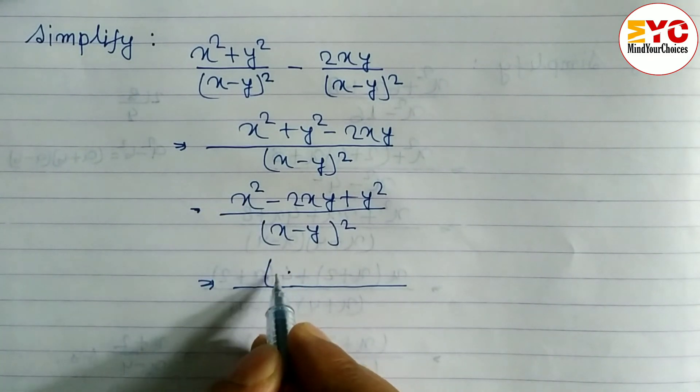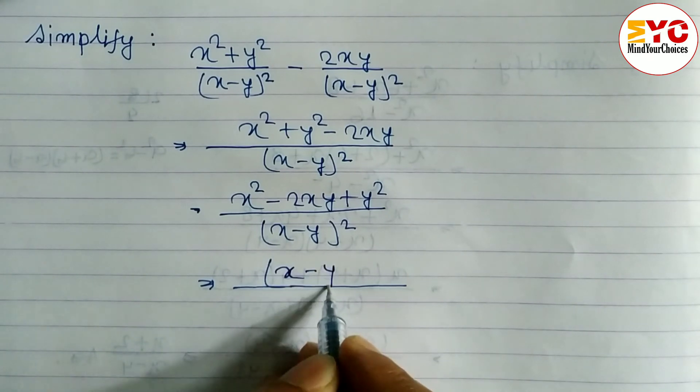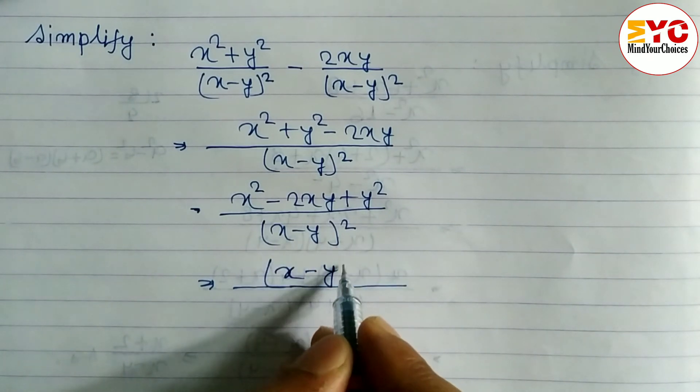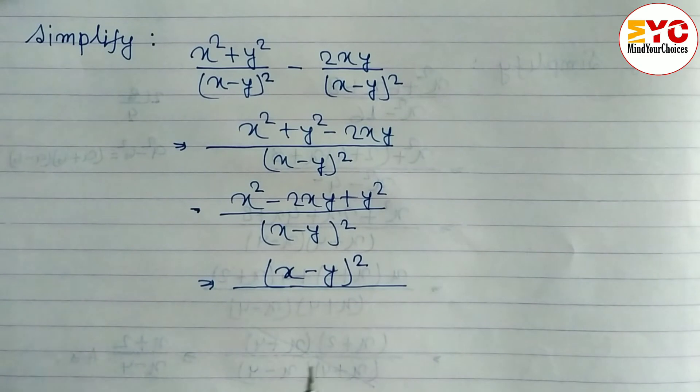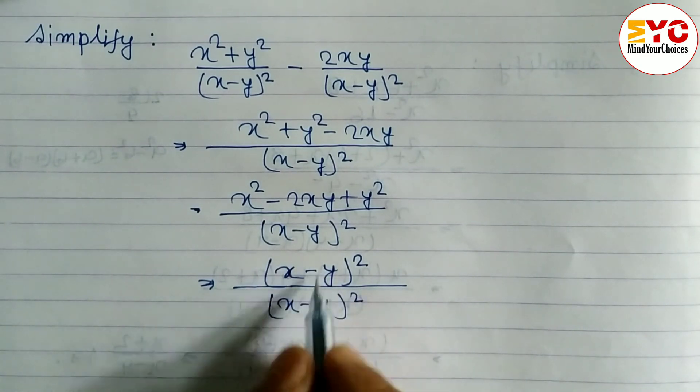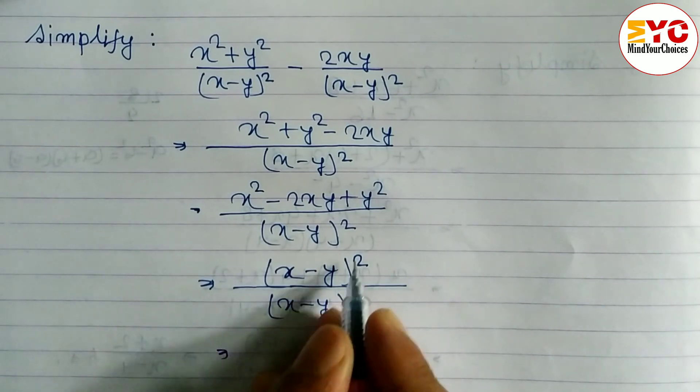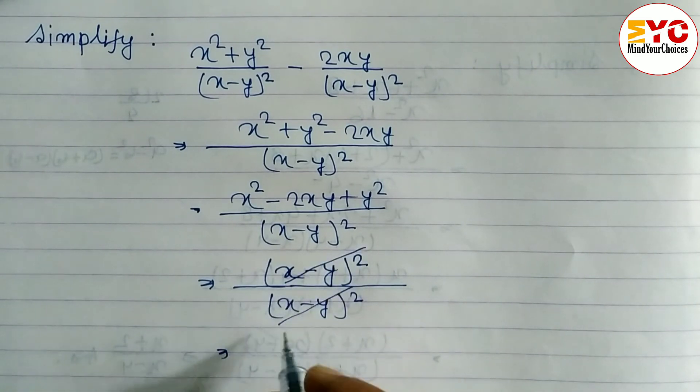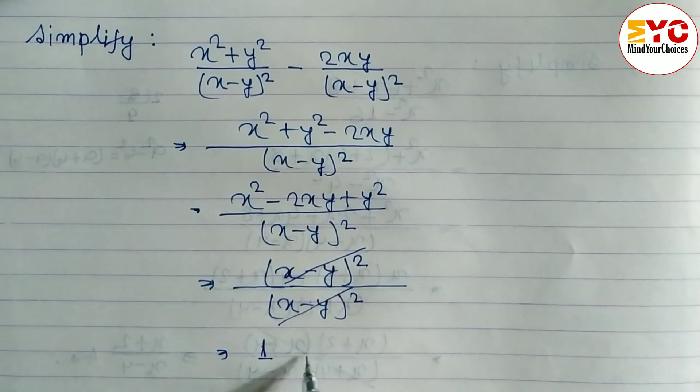So we can write x minus y whole squared, and denominator also x minus y whole squared. You can see in numerator and denominator same. When you eliminate both, what we can have remaining? One. Which answer is one. Hope you understand this simplification.